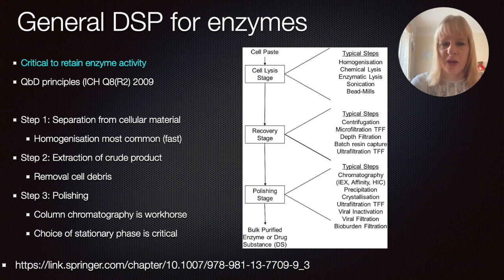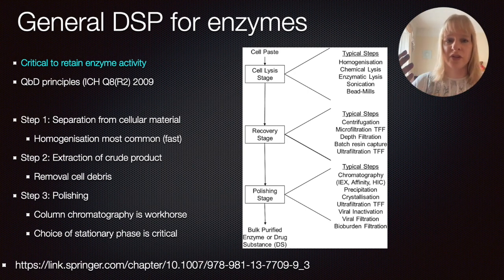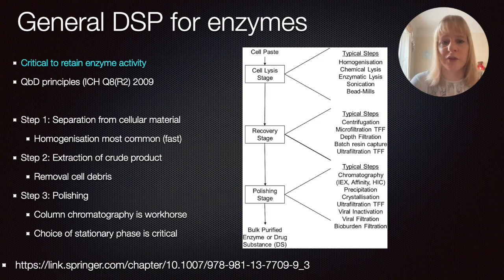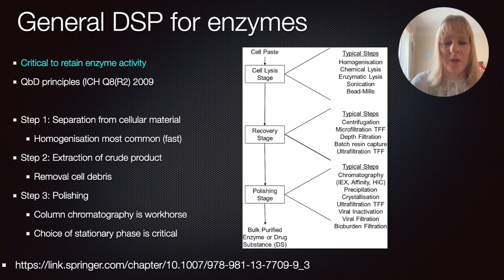Then we get to the recovery, which is a type of extraction of accrued products where you need to remove cell debris and other things. When you lyse the cell, there's a lot of other products — for instance, DNA that remains behind and which you want to remove. This is typically done either with a series of filtration steps or centrifugation. Finally, there's the polishing step, where precipitation and crystallization are also options.